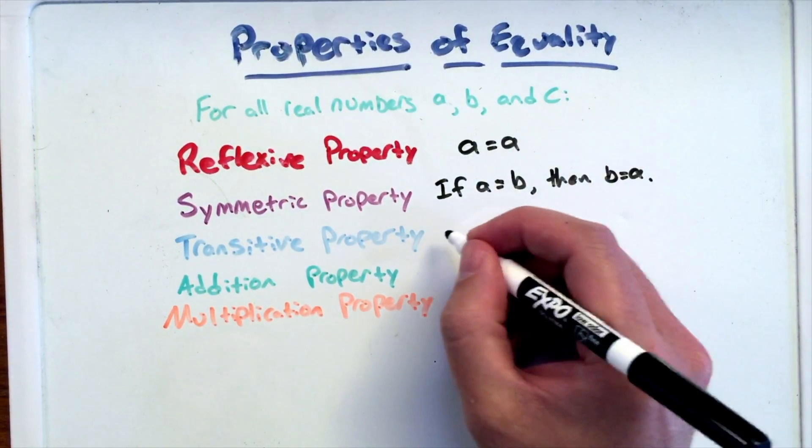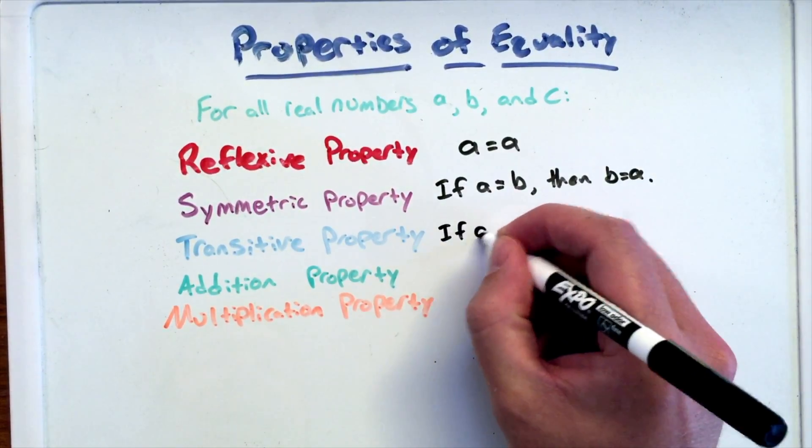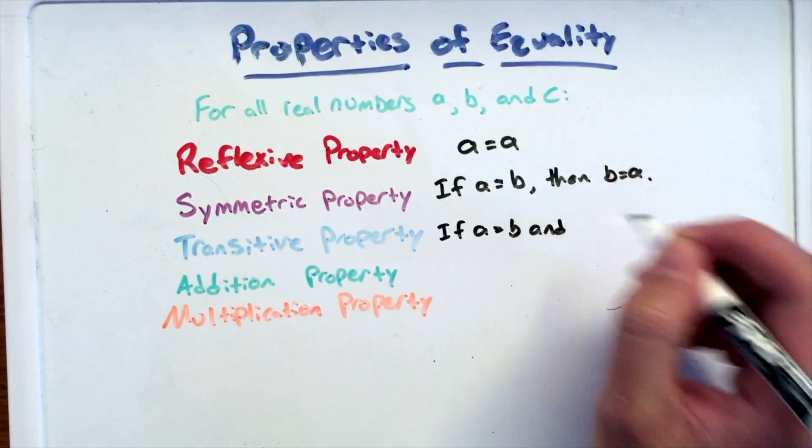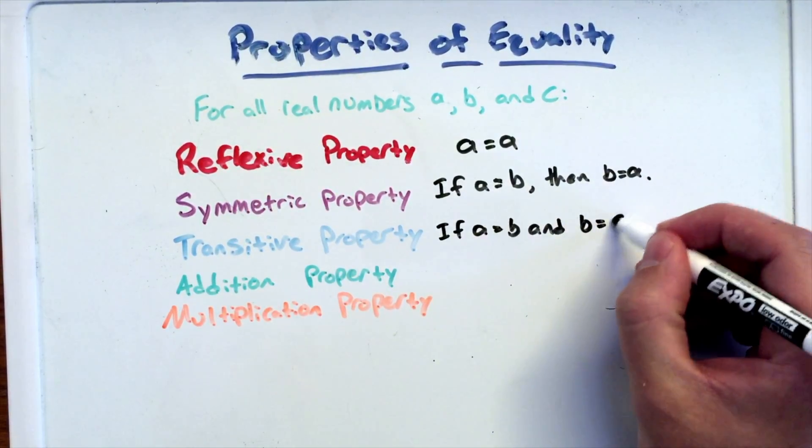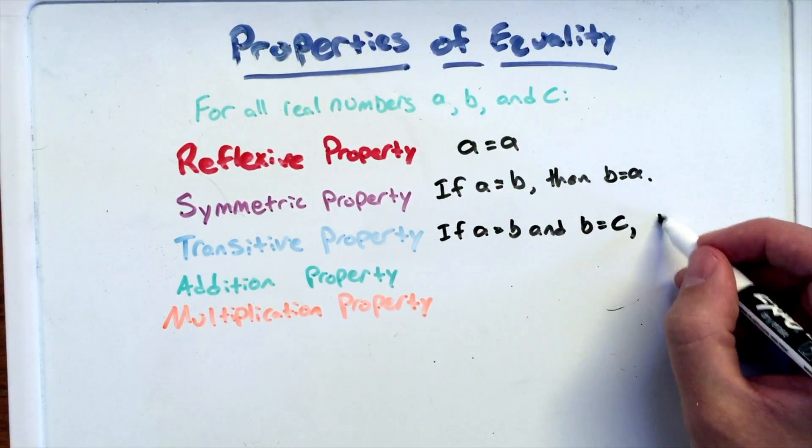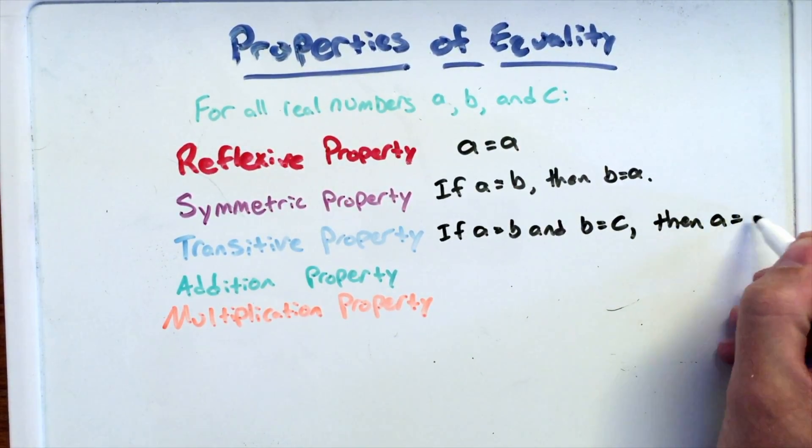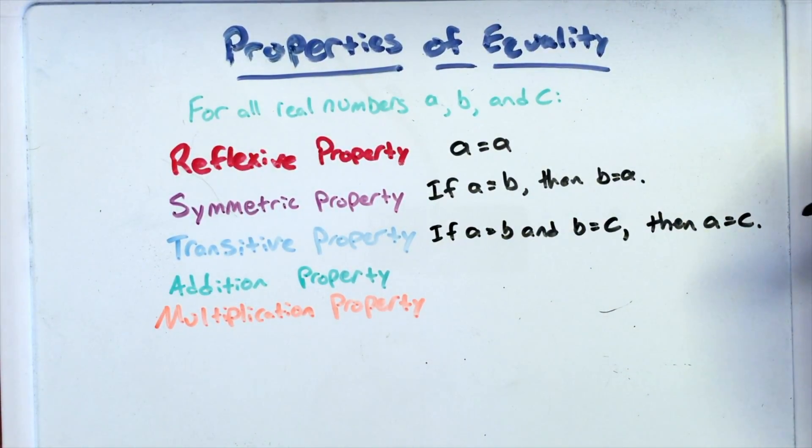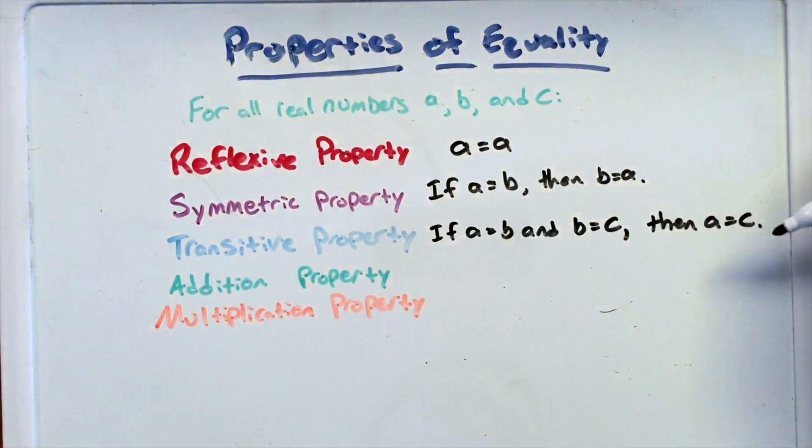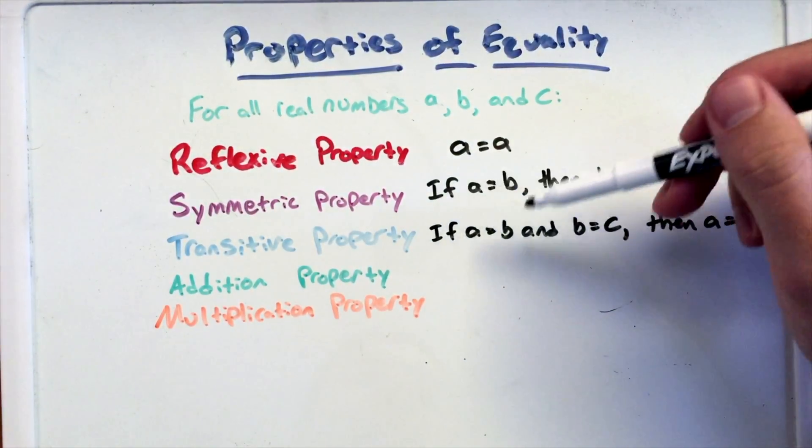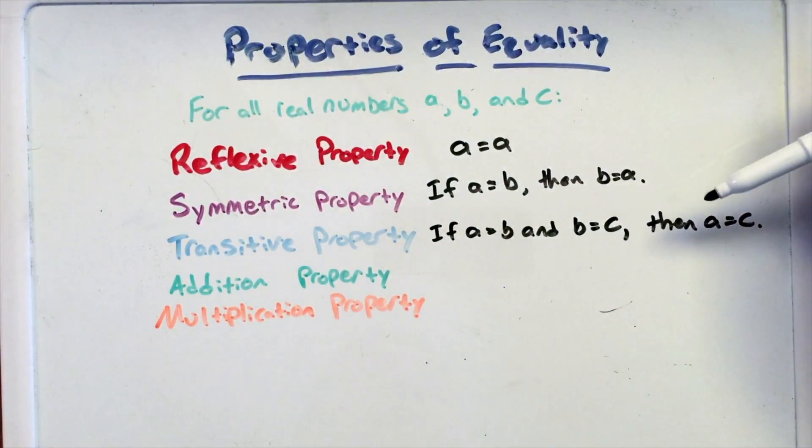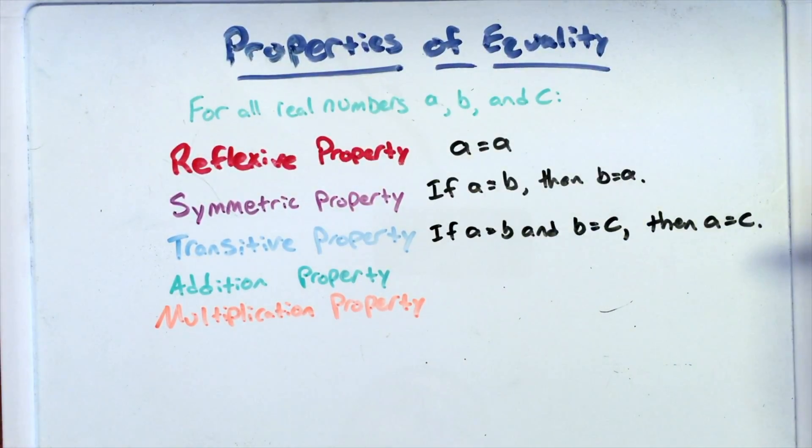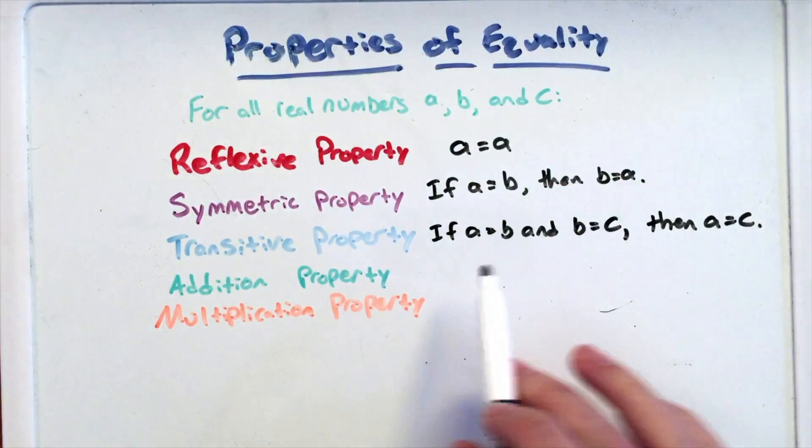The transitive property is: if A equals B and B equals C, then A equals C. And this is like an if-then statement. If this occurs - if A equals B and B equals C - then we can say that we can jump that connective B there and say that A equals C. That's the transitive property.